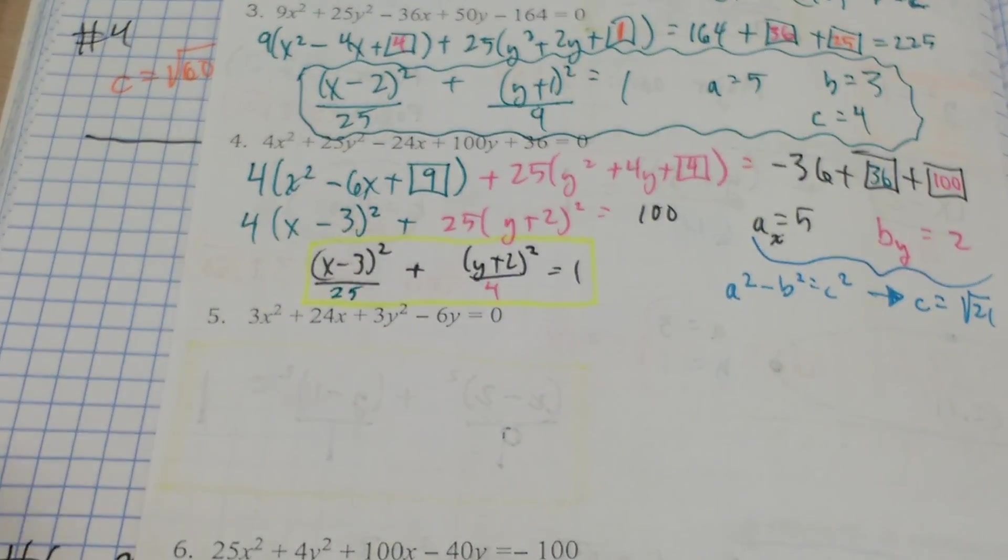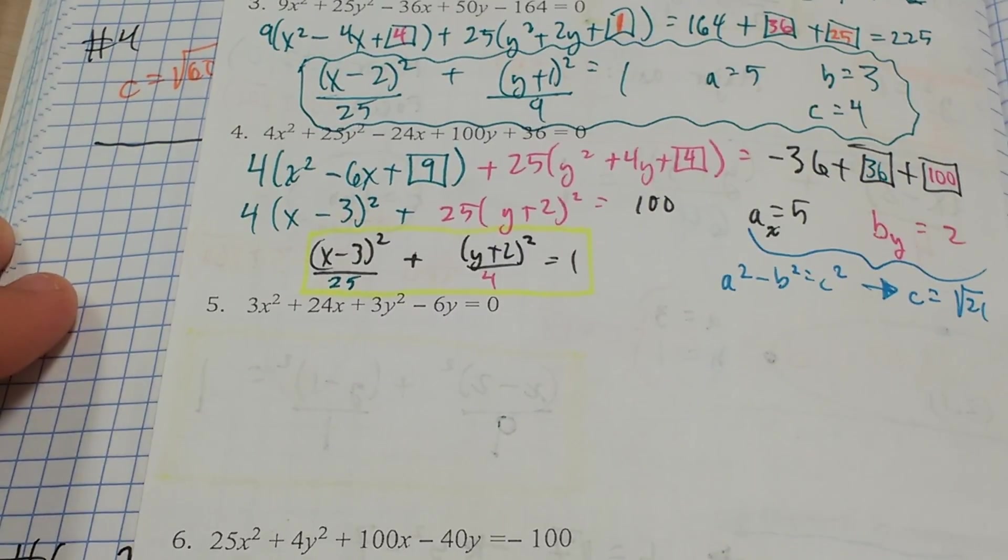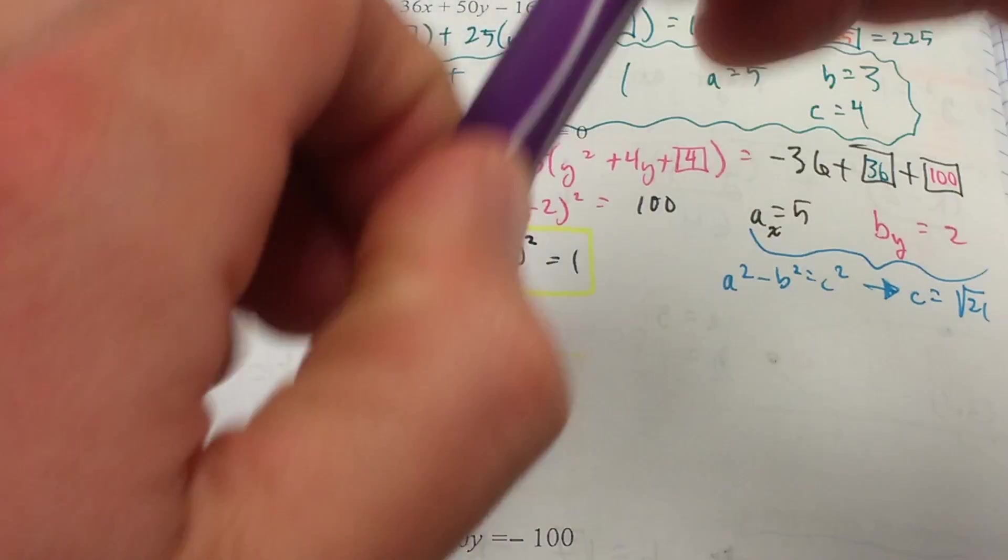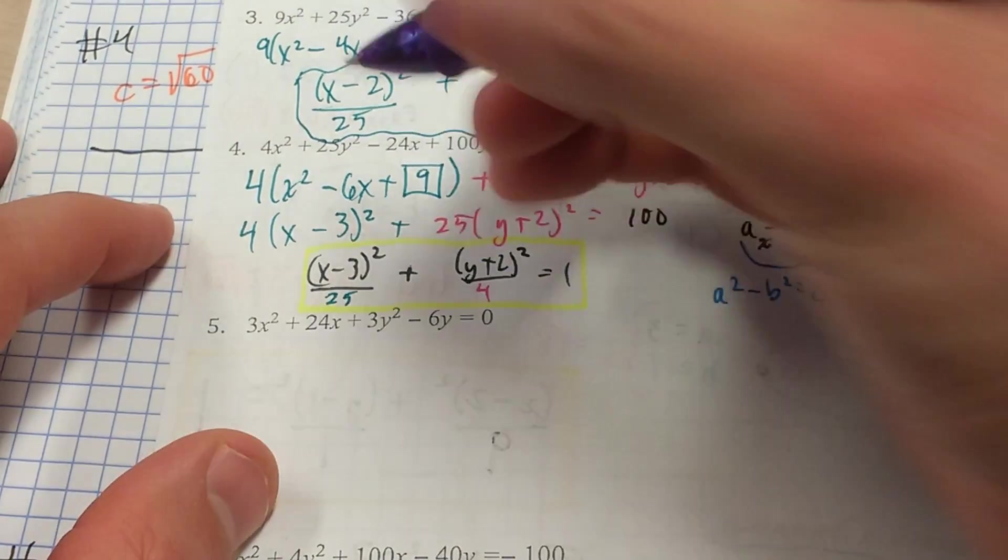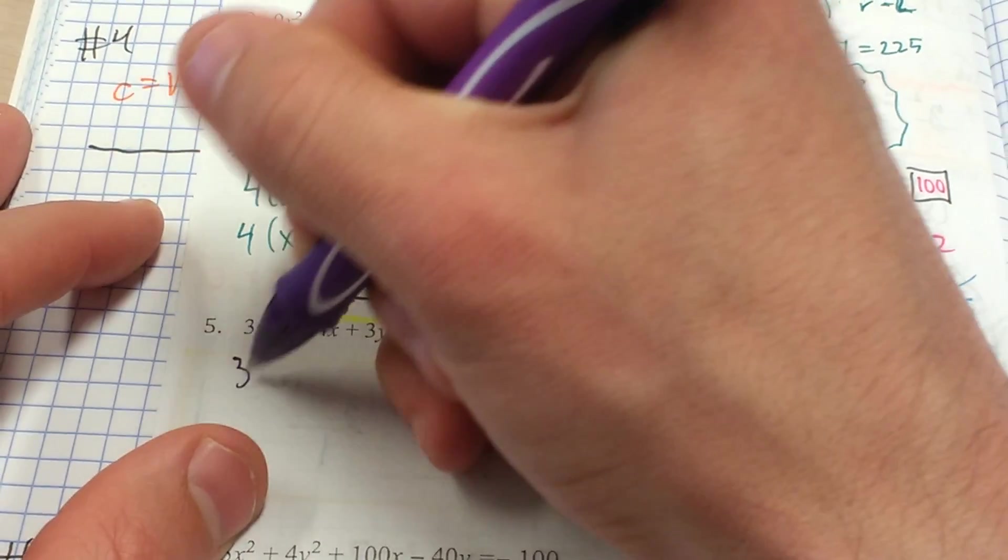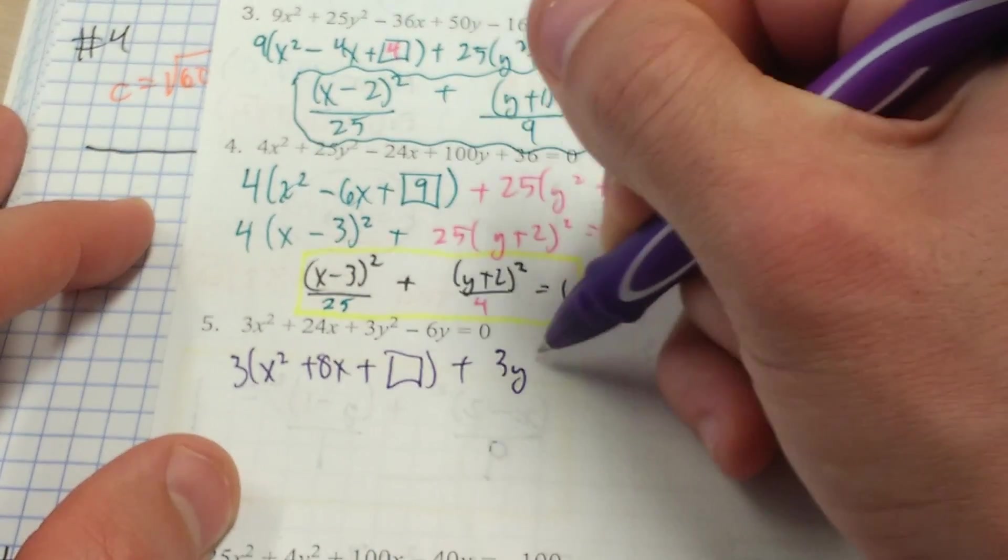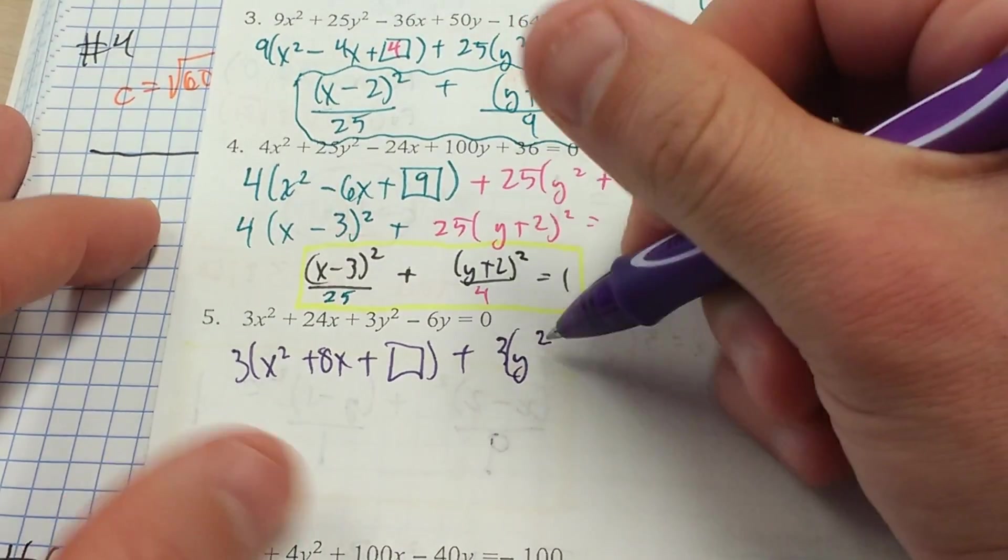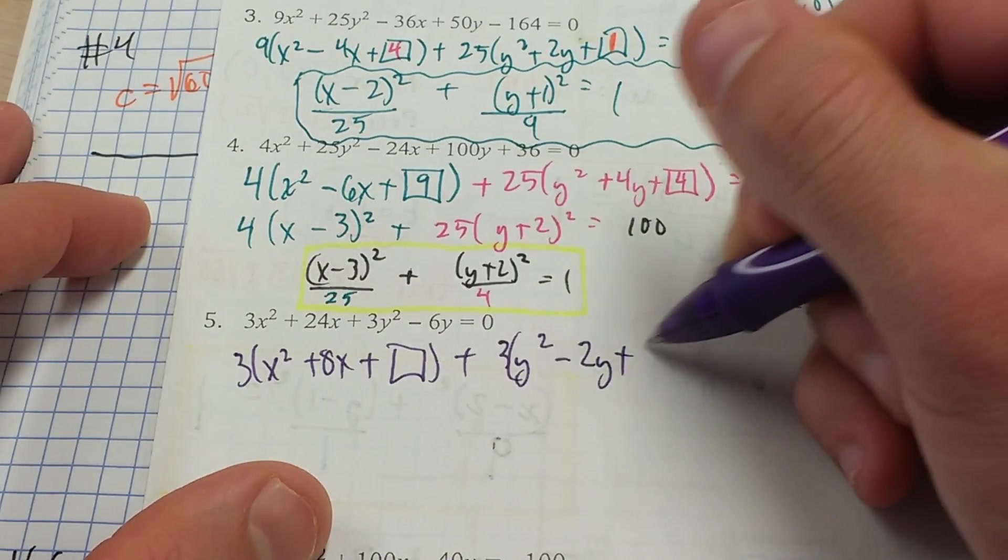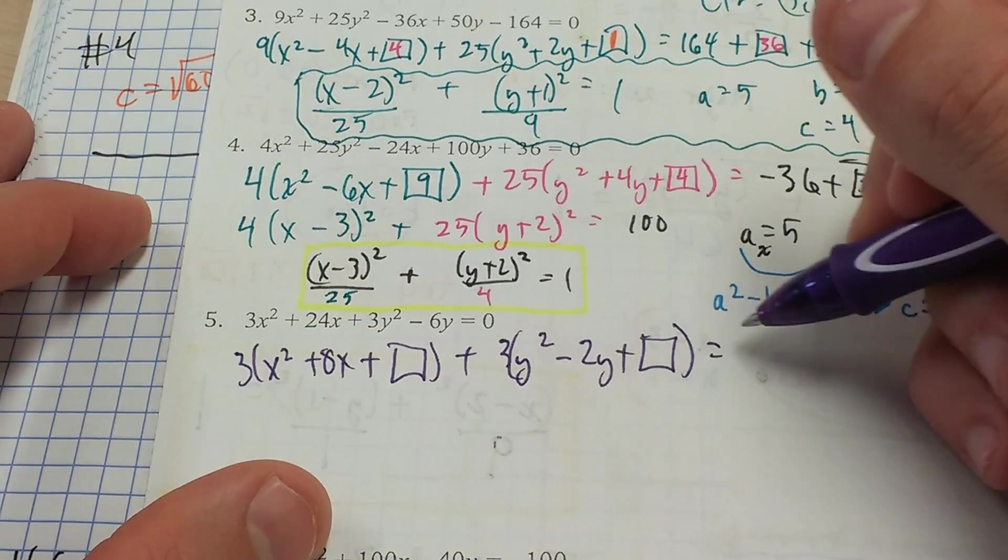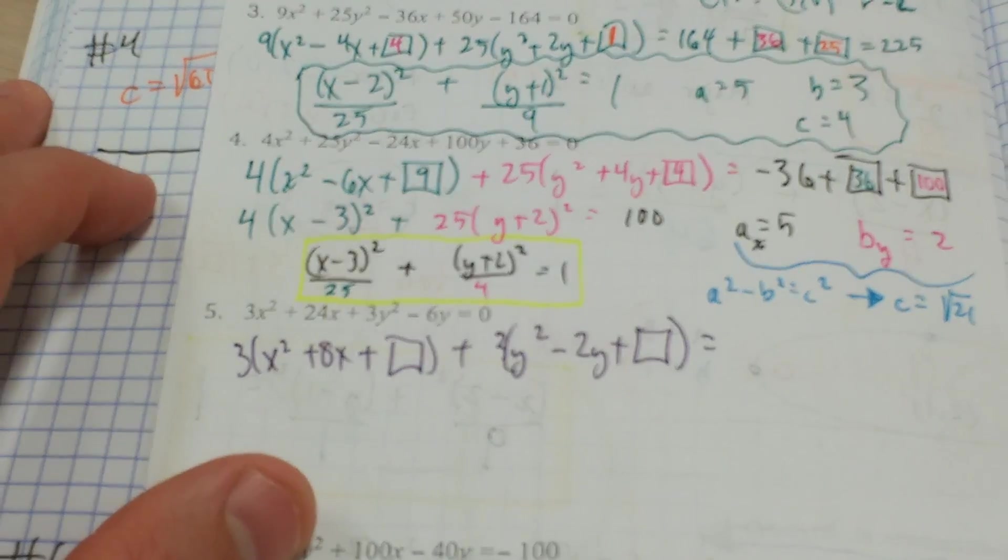We did 4 in class. So moving on to number 5. Recognize that it is a circle. How so? Because it has the same quadratic coefficient. So we'll factor that 3 out to help us complete the square. Plus 3y squared, and then minus 2y plus some number. And there is no constant on the other side, so we don't have to worry about that.